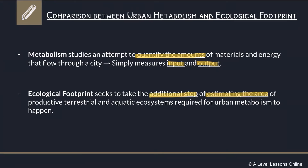The ecological footprint takes the additional step of estimating the land area involved. While the metabolism shows input and output generically — for instance, Singapore consuming this much input and throwing out this much output — the footprint tells you exactly how much land is consuming that input and output. For example, Singapore's footprint could be 20 times its actual land area size. So the footprint shows how severe a metabolism could actually be, compared to the metabolism's very generic statement.